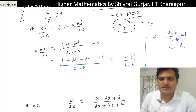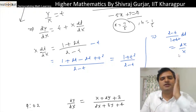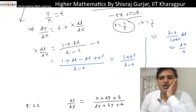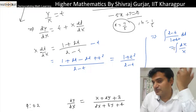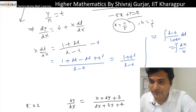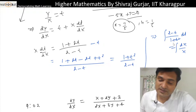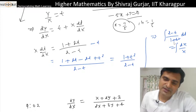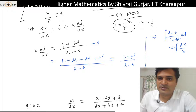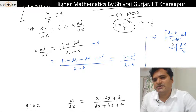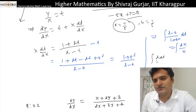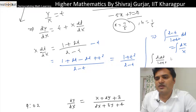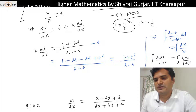This is now variable separable. We can split as: 2 dT/(1 + T²) minus T dT/(1 + T²) equals dX/X. The first term integrates to 2·tan⁻¹(T), where T = Y/X. For the second term, assume Z = 1 + T², so 2T dT = dZ.